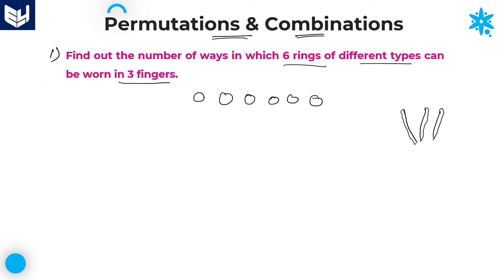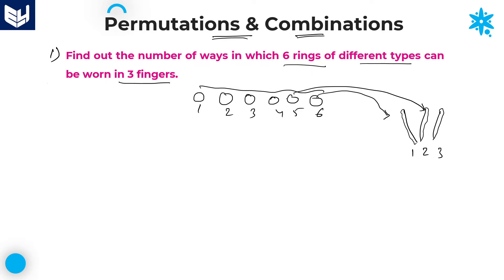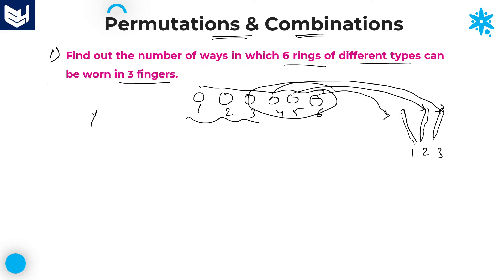Whenever you are wearing a ring, each and every ring — let's say one, two, three, four, five, six — and we have only three different fingers. If you keep only one ring on each finger, only three rings will be used and three will be left over. This means the problem is indirectly saying that repetition of rings to the fingers is allowed.